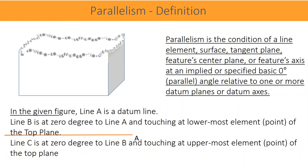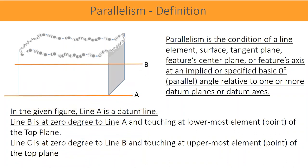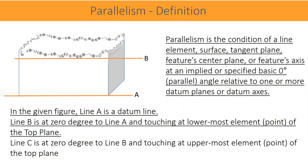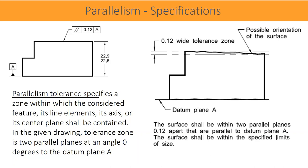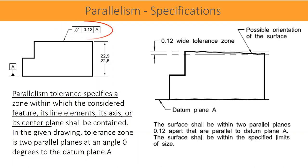In the given figure, line A is a datum line. Line B is at zero degrees to line A, touching at the lowermost element of the top plane. Line C is at zero degrees to line B, touching at the uppermost element of the top plane. Parallelism tolerance specifies a zone within which the considered feature — its line elements, its axis, or its center plane — shall be contained.